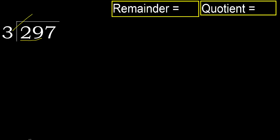3 multiplied by which number is nearest to 29, but not greater. 3 multiplied by 9 is 27, which is not greater. Subtract: 29 minus 27 is 2. Next.